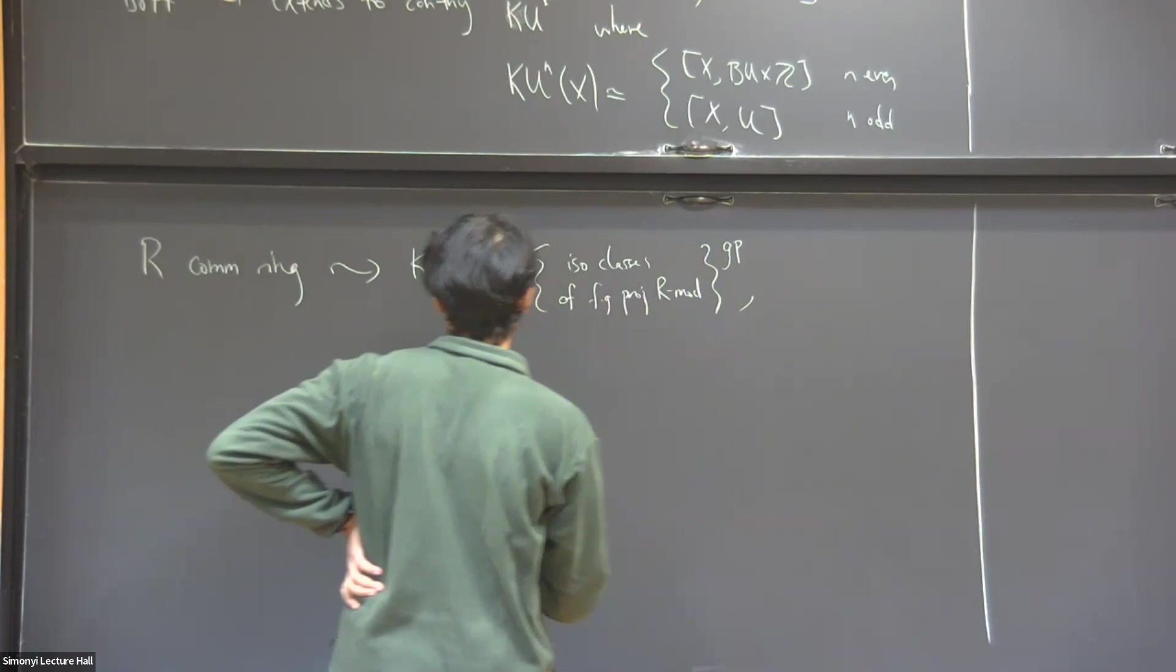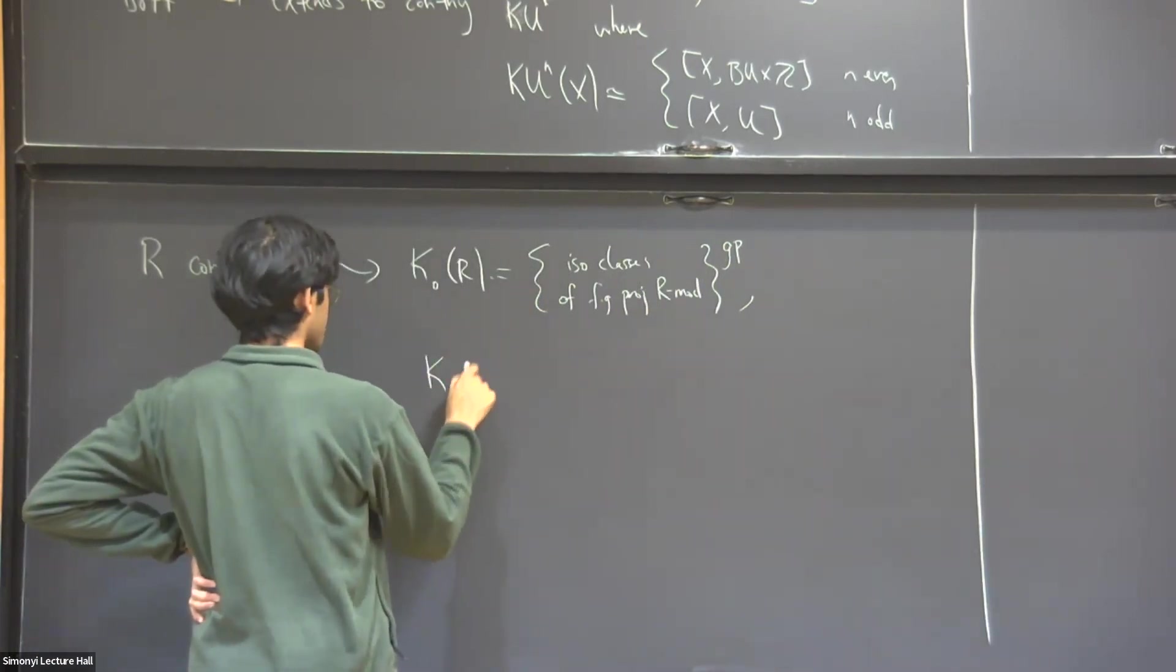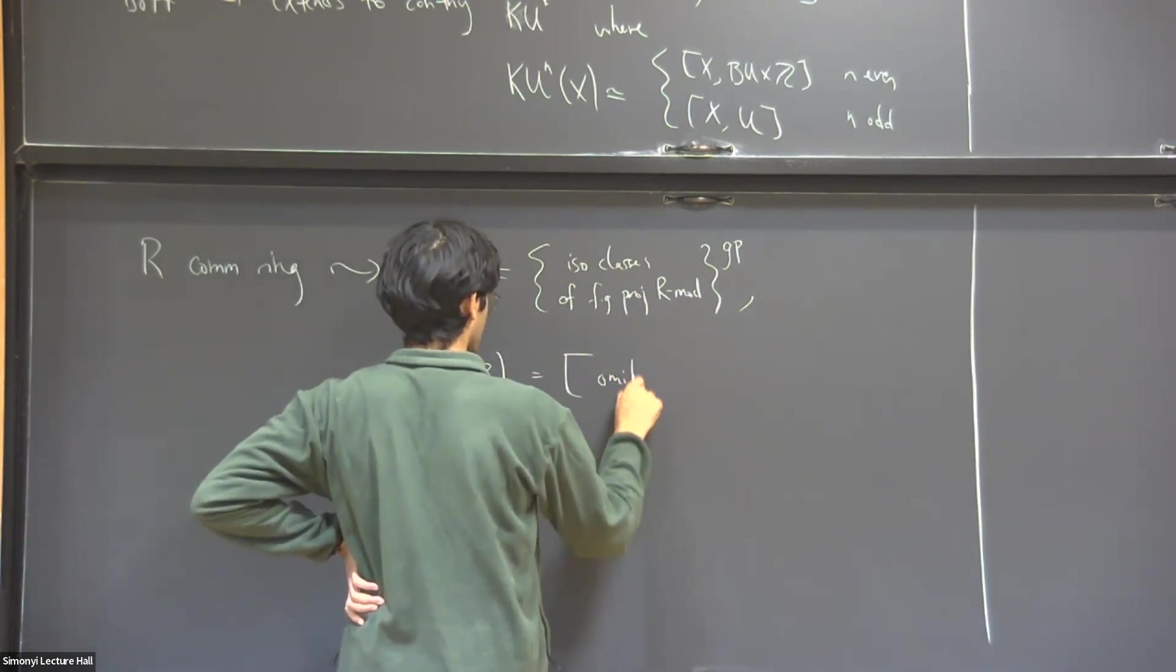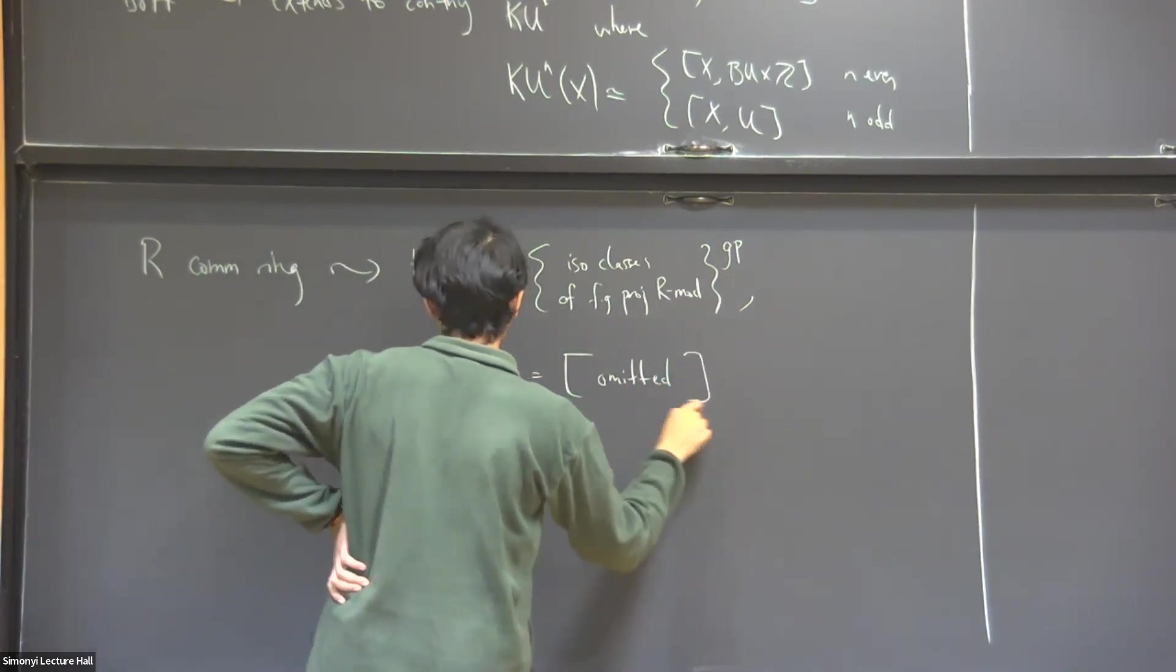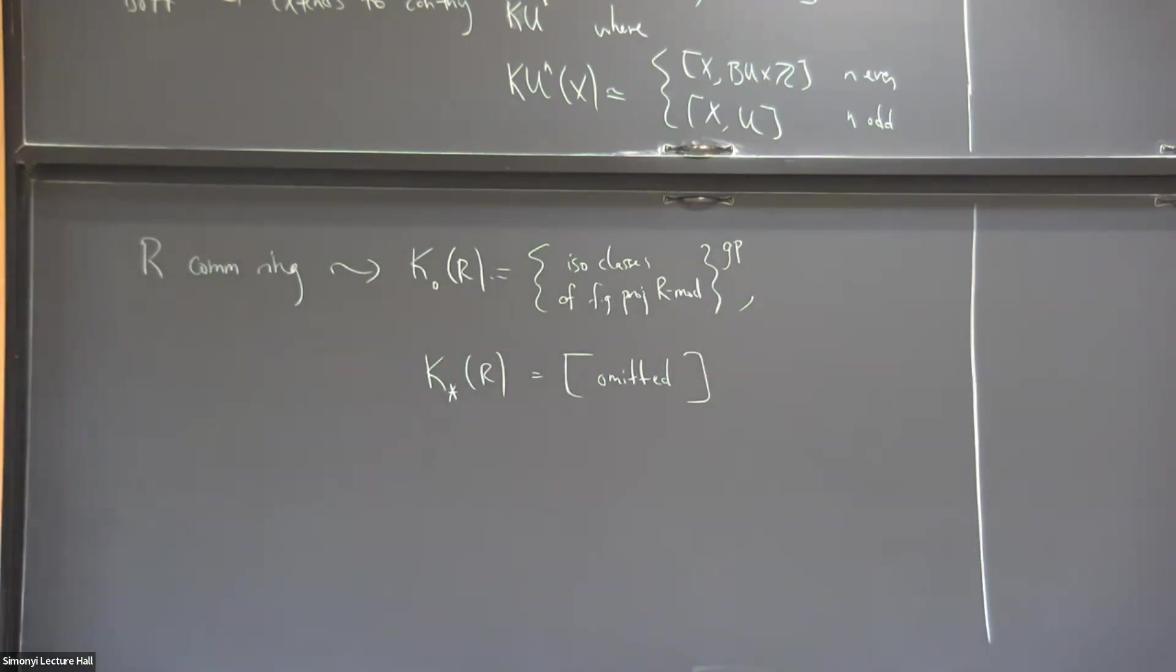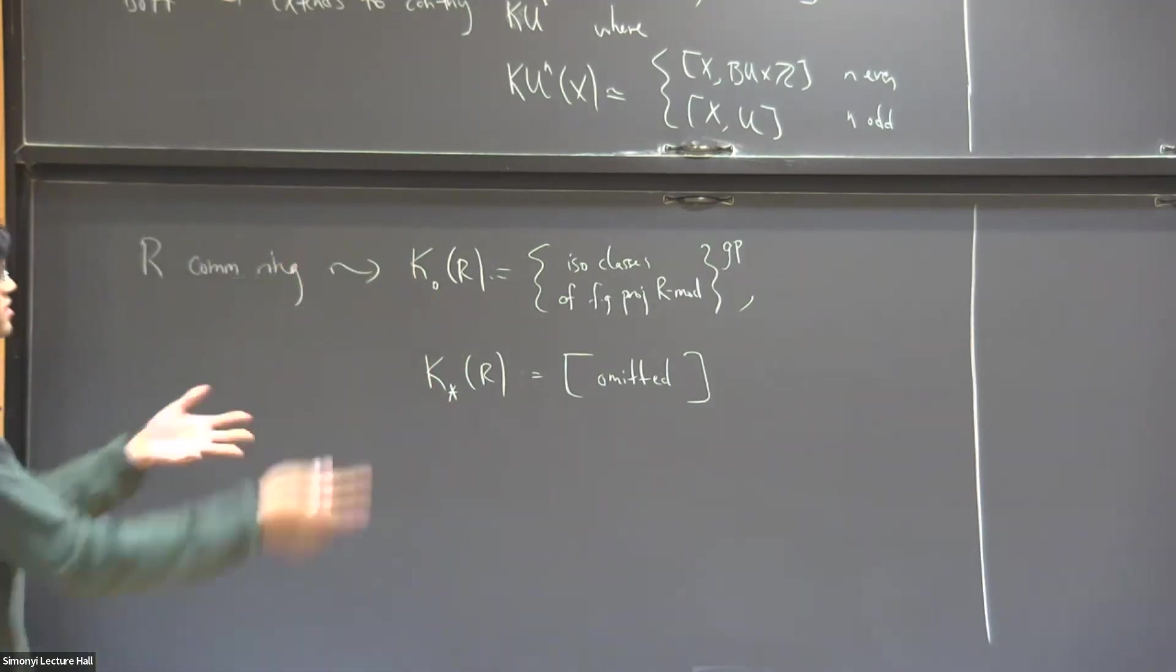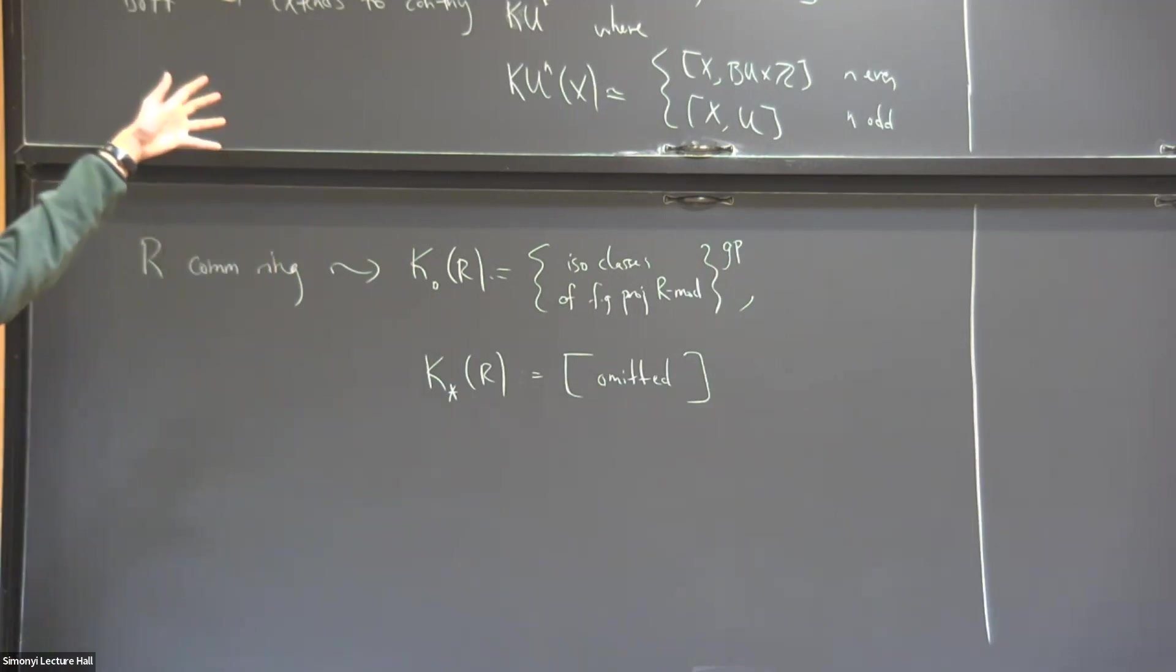And then there's also other K-groups in this setting as well. And the definition is omitted. Yeah. So let me not say anything about that, but it took a lot of work. And so there are these other K-groups which are in some sense similar to this, but in many ways, not similar to the topological setting.